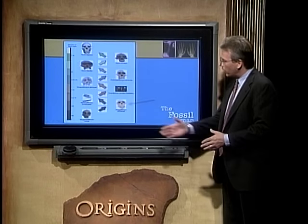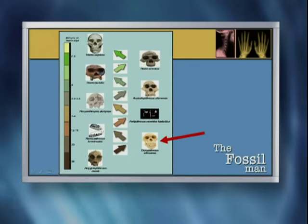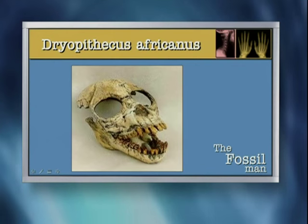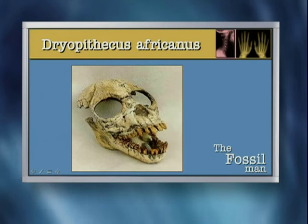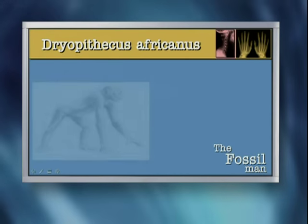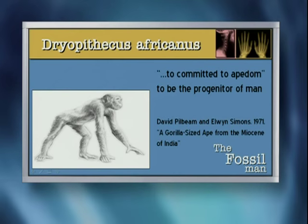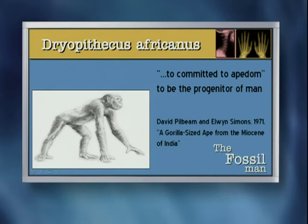The next creature on our chart, working our way up, is Dryopithecus africanus, the woodland ape from Africa. If we look on the screen you'll notice a beautiful-looking skull, though again some of it has been restored. Judgment has already been cast on this particular creature. David Pilbeam made the comment that this particular creature is too committed to apedom to be the progenitor of man. So again, we just have another skull of an ape, and that's it.